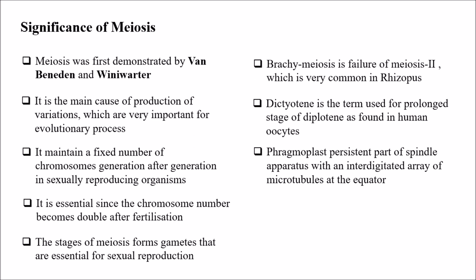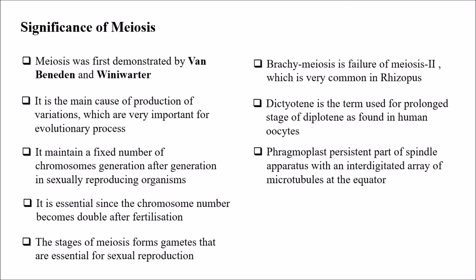In my next class we will discuss about further reproductive lessons like male and female reproductive systems. Coming to the last part: endomitosis, or endo-duplication, is the replication of chromosomes without the division of the nucleus.